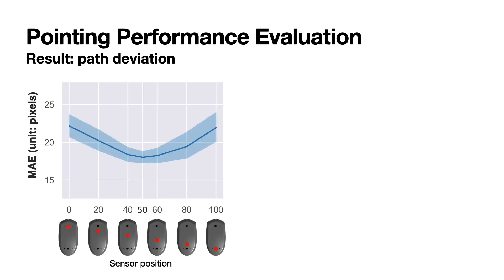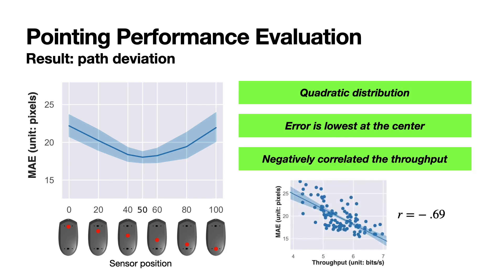We again find the quadratic distribution of the error, and the minimum error was found at the center. When we compared the amount of the error and the pointing performance, we could find a strong negative correlation between them. This suggests that low performance may be because of the higher error.